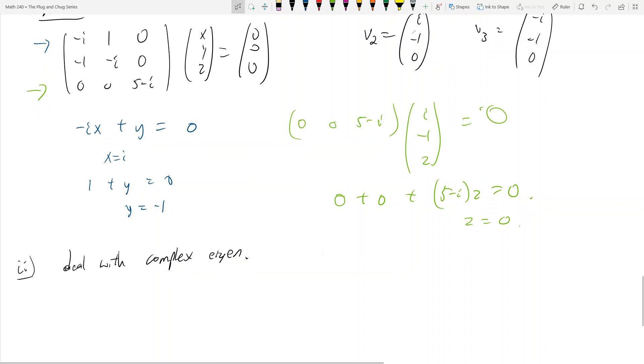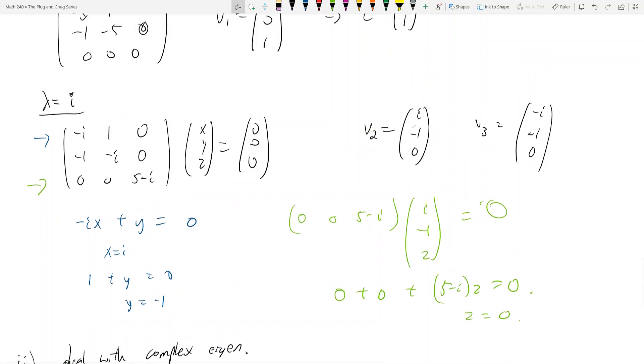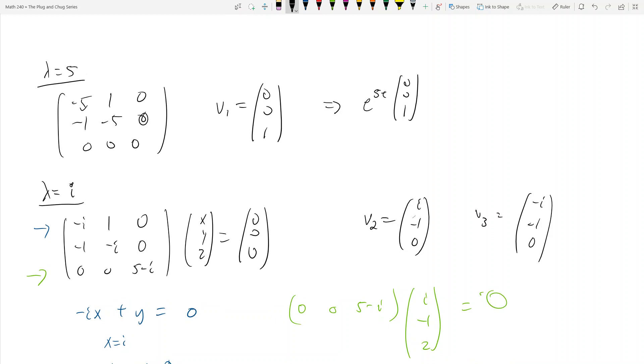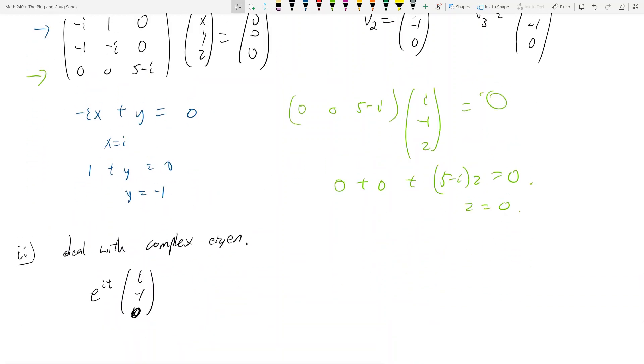Alright. And so you guys, it's tempting, right? It's tempting, and it's correct to write then this as e to the it times i, negative 1, 0, right? Which is exactly what we did here, right? We just plug in the eigenvector value, and then we slap the eigenvector right next to it, which is, yeah, we'll do that here. Except the problem is, look at our original matrix, right?